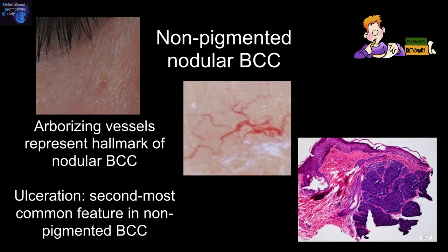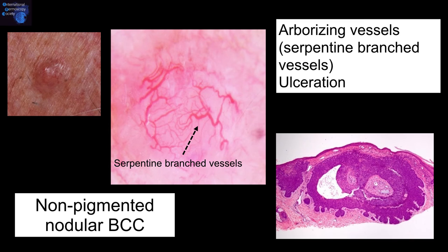Non-pigmented nodular basal cell carcinomas: the arborizing vessels — the serpentine branch vessels — represent the hallmark of nodular basal cell carcinoma. The second most common feature is areas of ulceration.